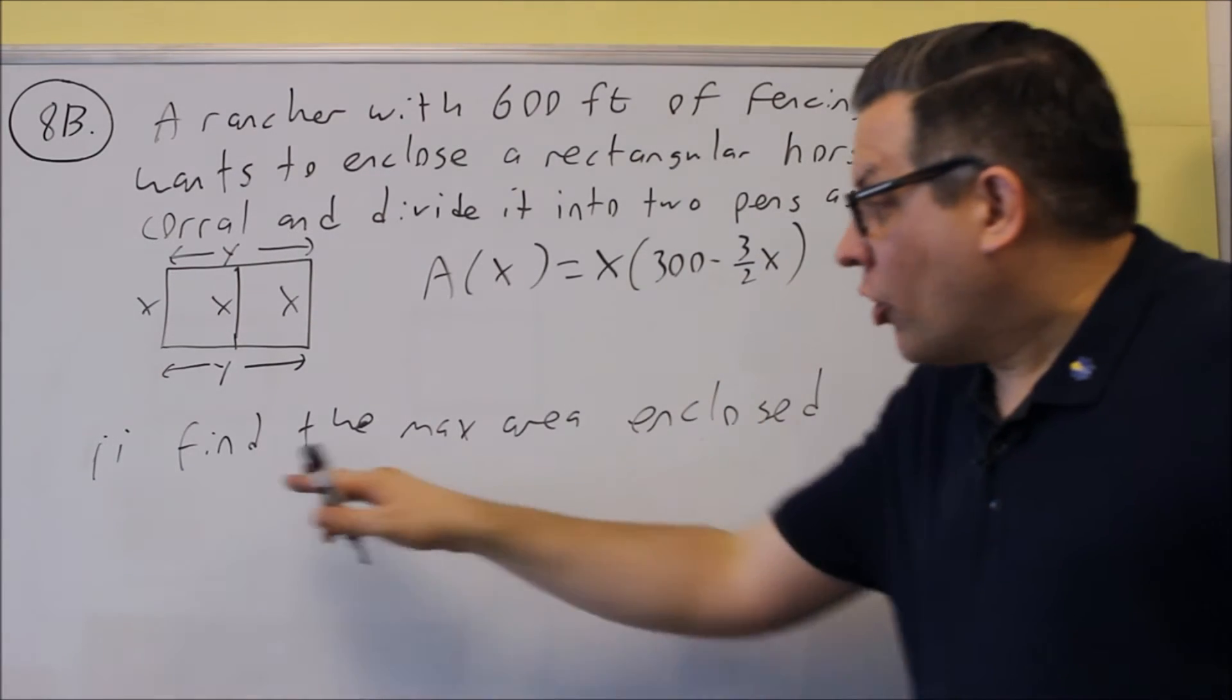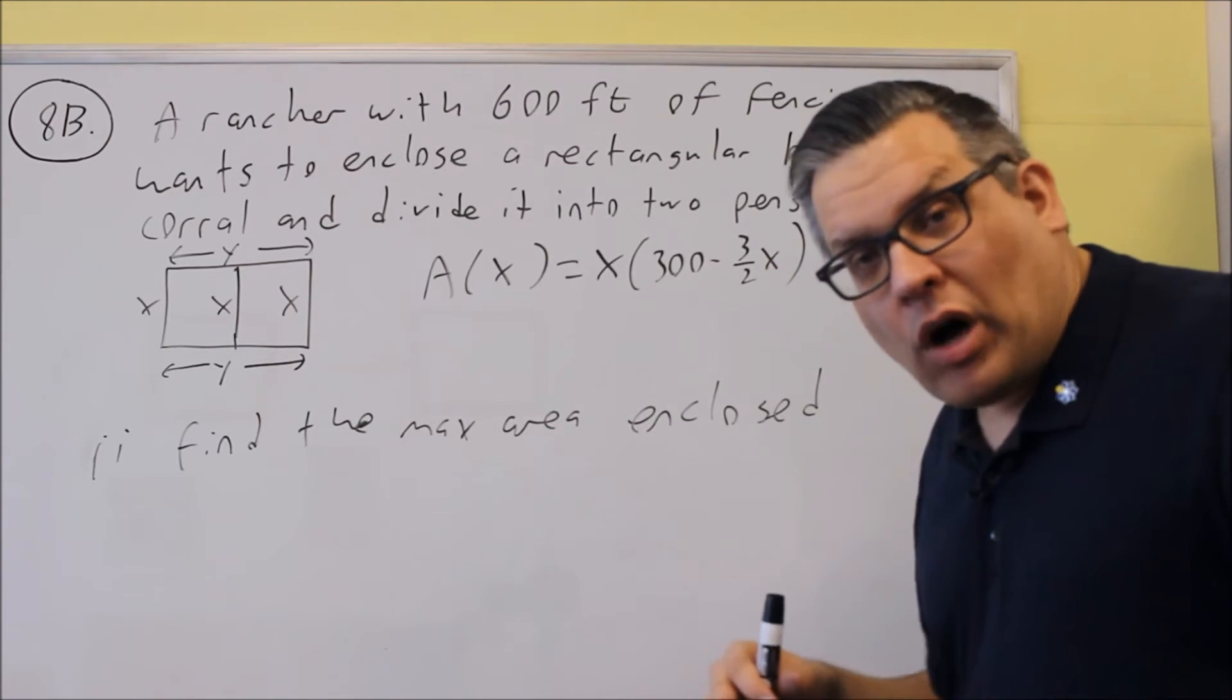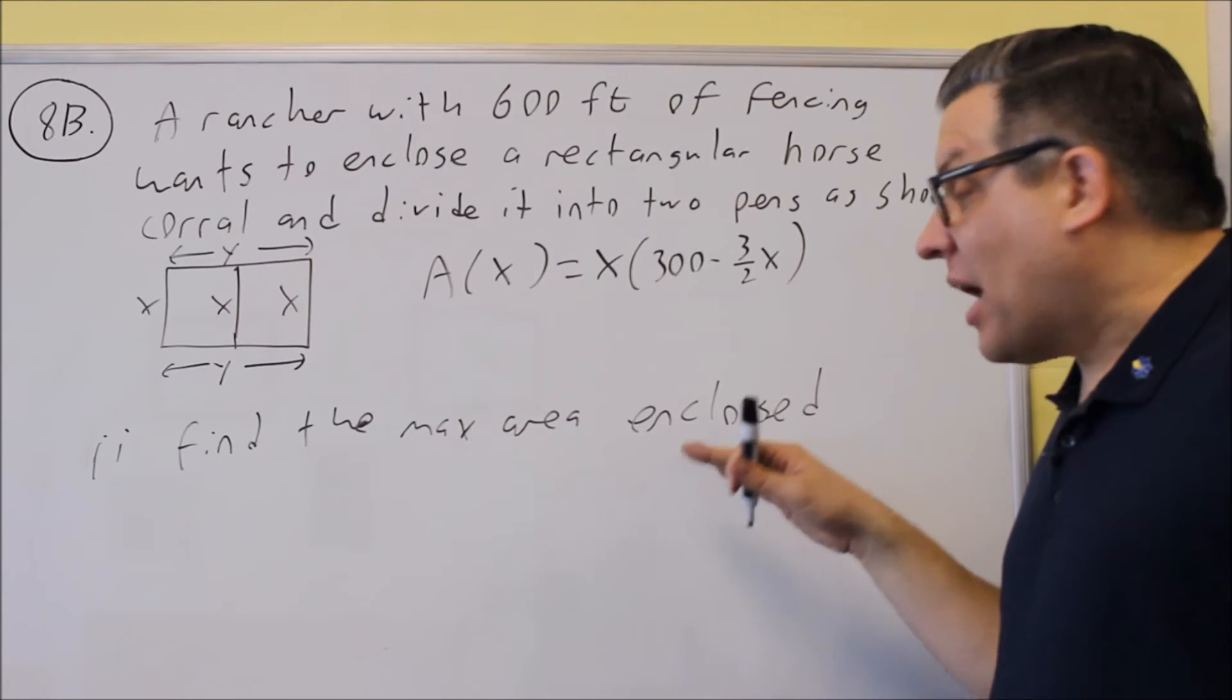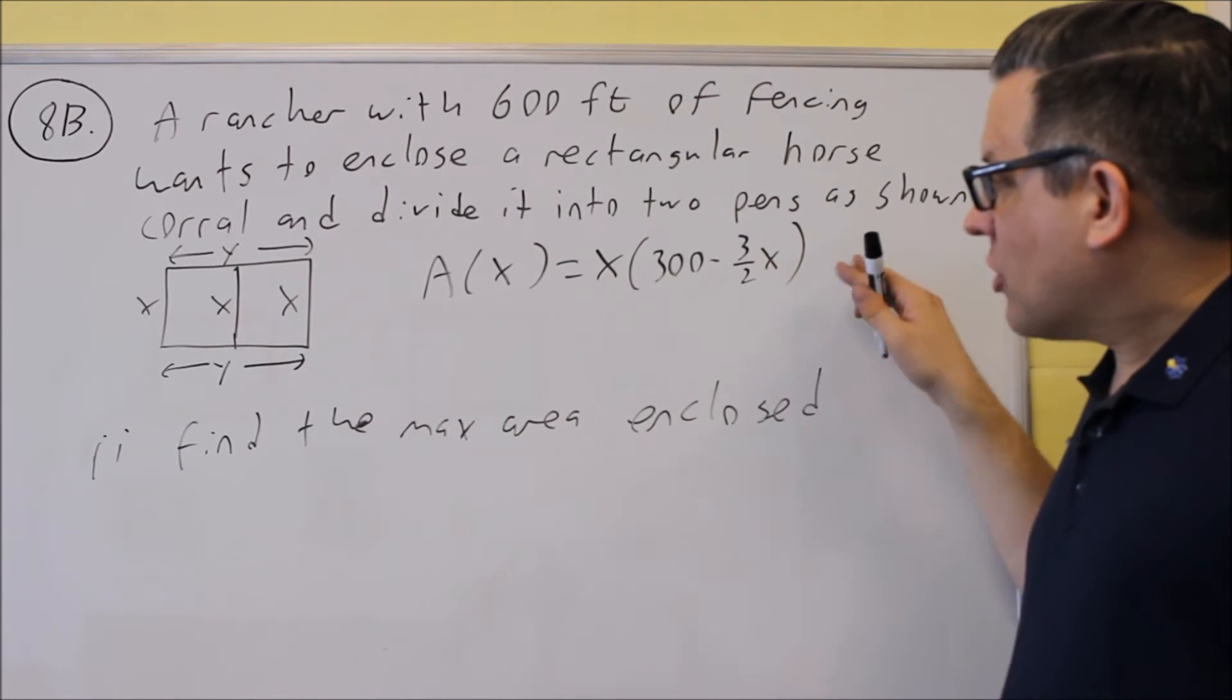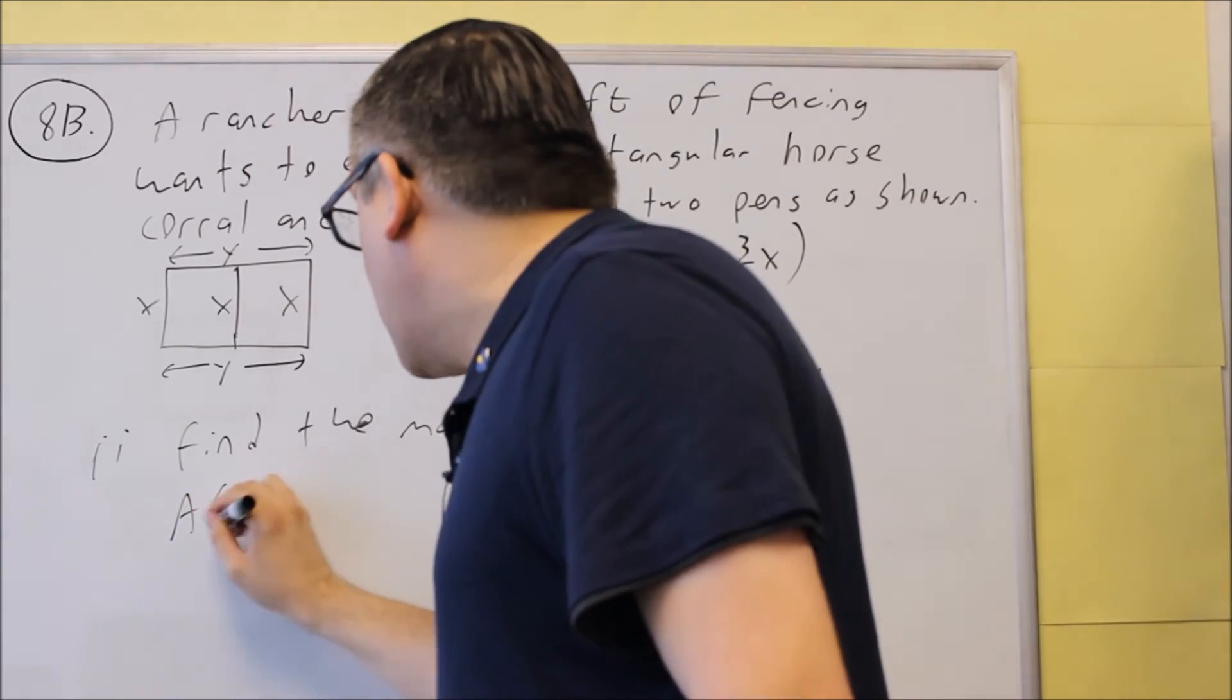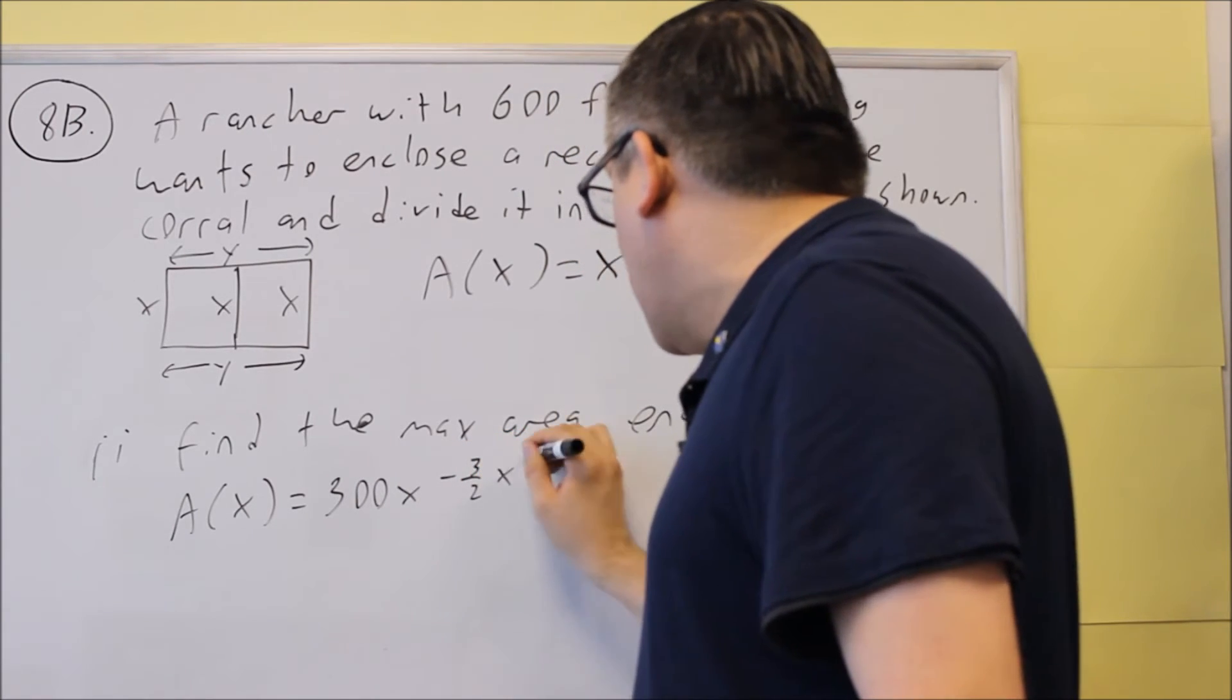Now be careful with the wording on this. The wording could also say find the dimensions. And if it says find the dimensions, that means it's only going to ask for x and y. But for this problem, it says find the maximum area enclosed. It means that we've got to find the x and y and multiply them together. So we're going to use our formula from here. I'm going to now multiply through by x. So I get 300x minus 3 halves x squared.